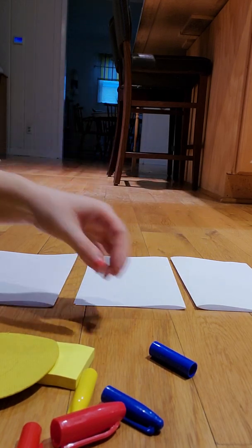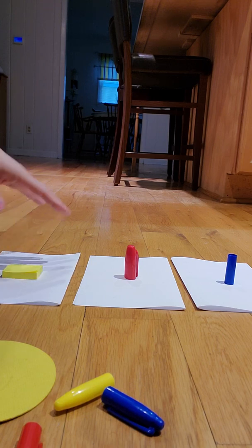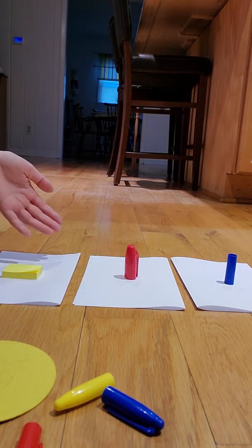Then you're going to put one of each color on each paper, so one color on each paper. You're going to do a blue, a red, and a yellow. This is so your child knows where to sort each color. Blue goes here, red goes here, yellow goes here.